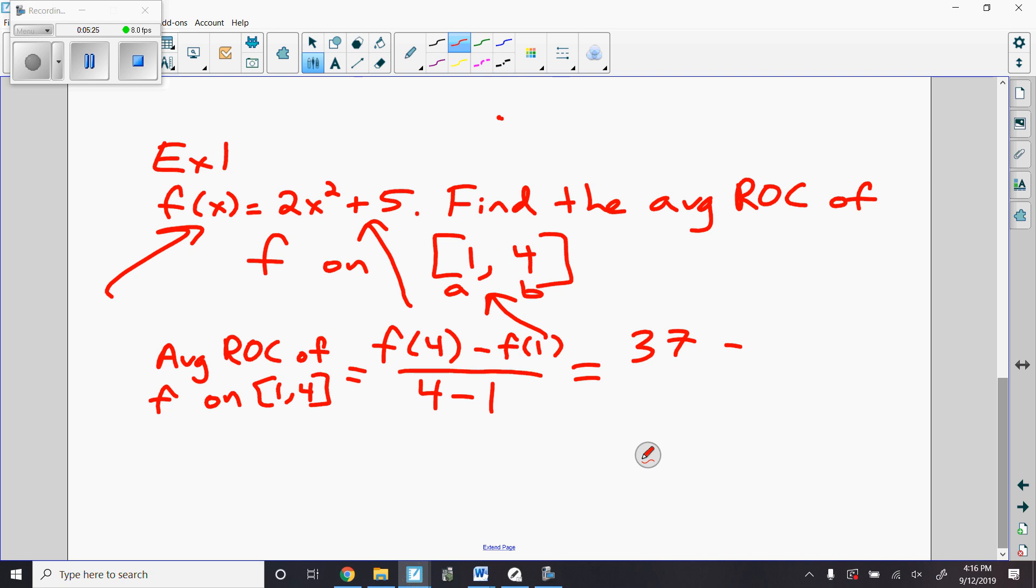Minus f(1) would be 1 squared is 1 times 2 is 2, 2 plus 5 is 7. So it would be 37 minus 7 over 4 minus 1, which is 3. So this would be 30 over 3, which equals 10. So the average rate of change would be 10.